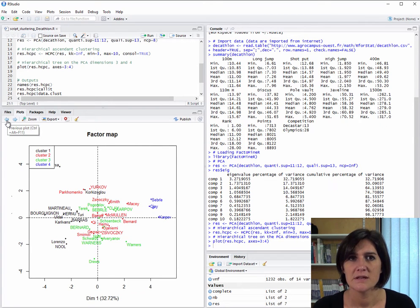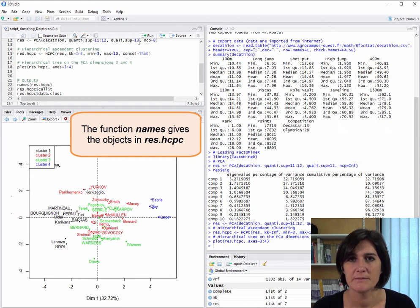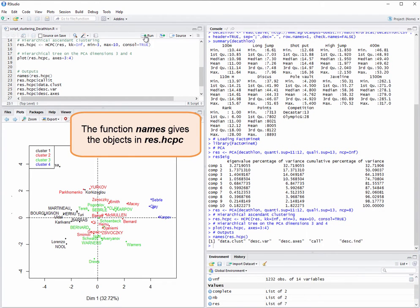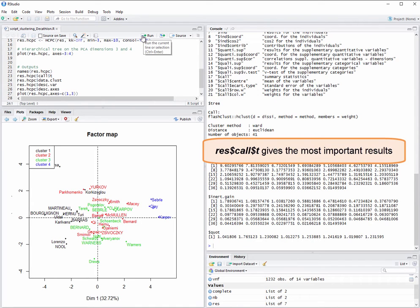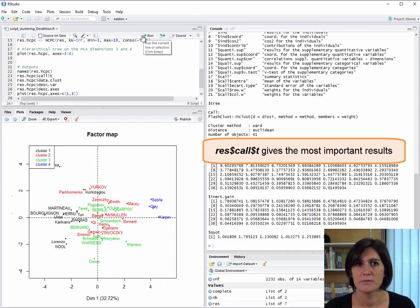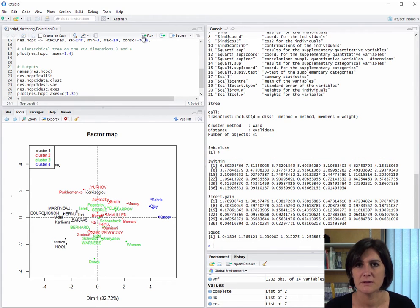We can now look at the results, starting by typing names res.hcpc. We can see that the results include several objects, data.clust, desc.var, desc.axes, call, and desc.ind, the results for the individuals. Let's start by looking at the results in call. In particular, we can get results on the hierarchical tree using res dollar call dollar t, which is the most informative object in call, showing first the principal component method results, in our case the PCA, followed by results on the hierarchical clustering. Here, the hierarchical clustering function used is called hclust.